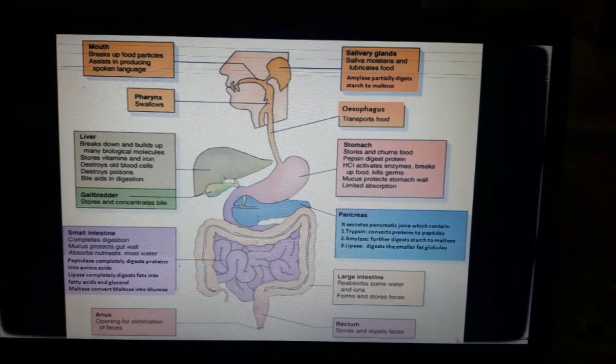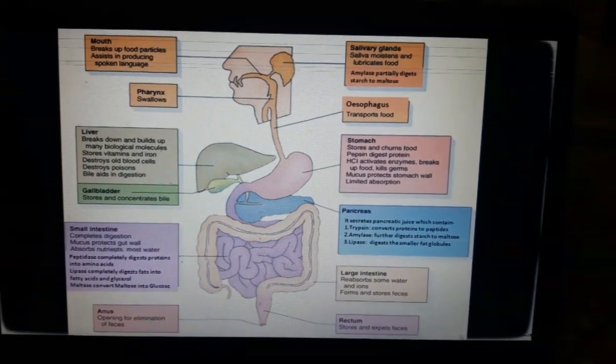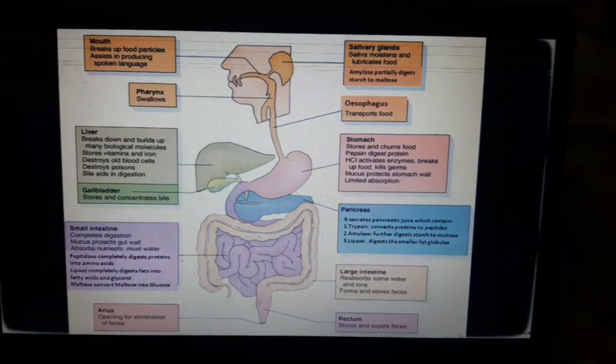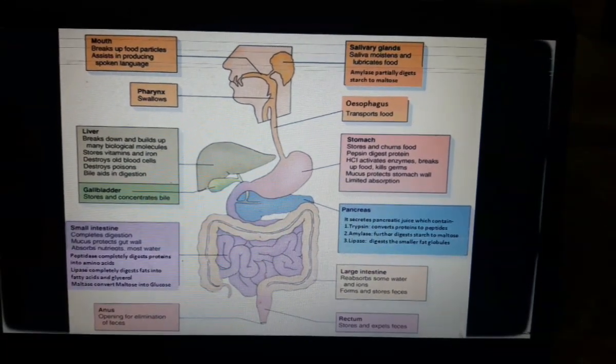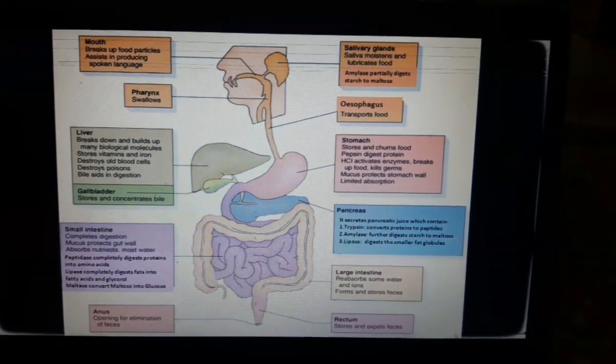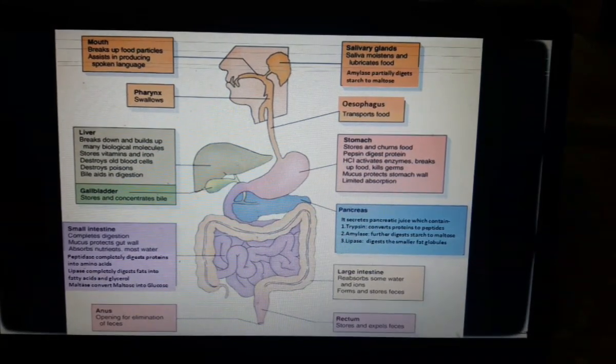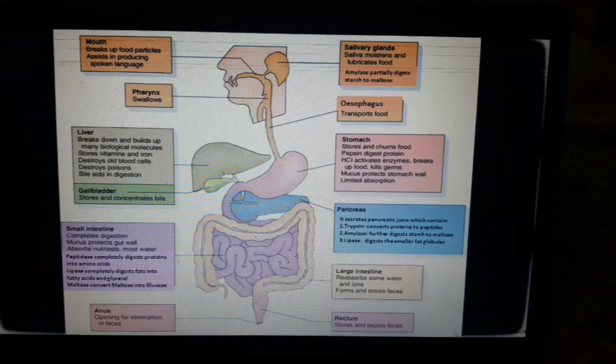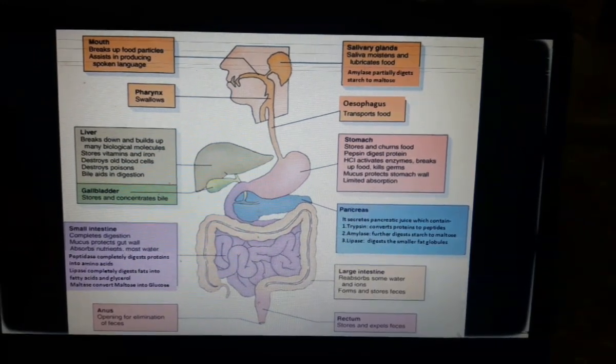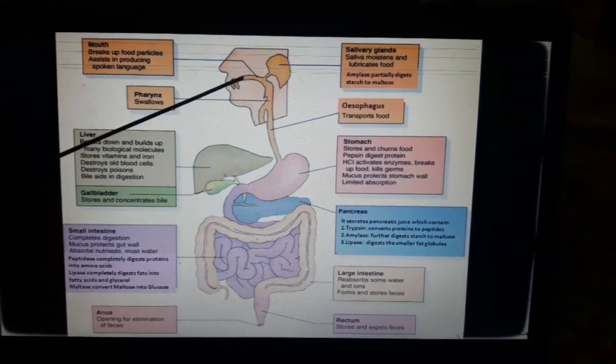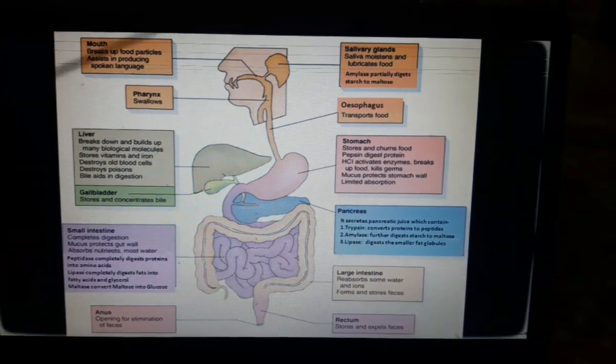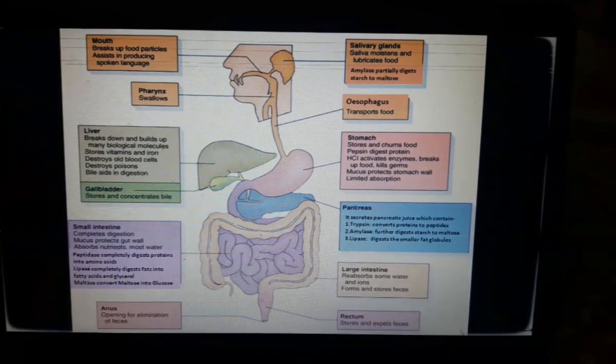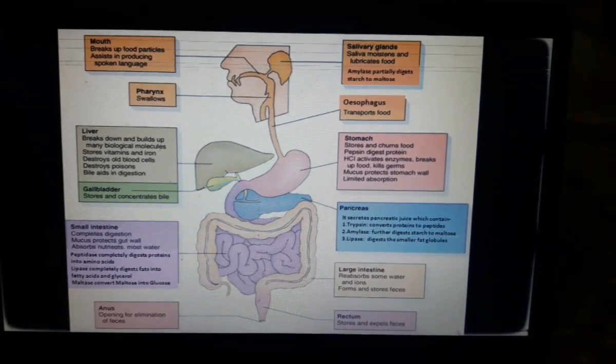Second is the salivary gland. What do they do? They secrete saliva. Saliva is a fluid that contains enzymes called salivary amylase. They also contain water and some salts. What is the function of salivary amylase? It partially digests the starch into maltose. What are the other functions of saliva?